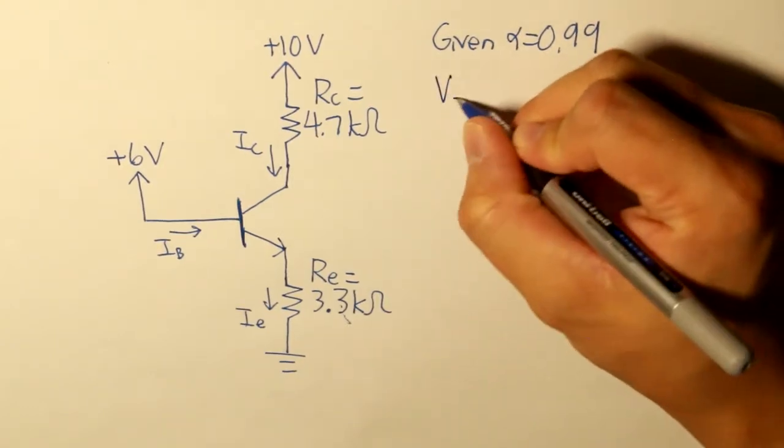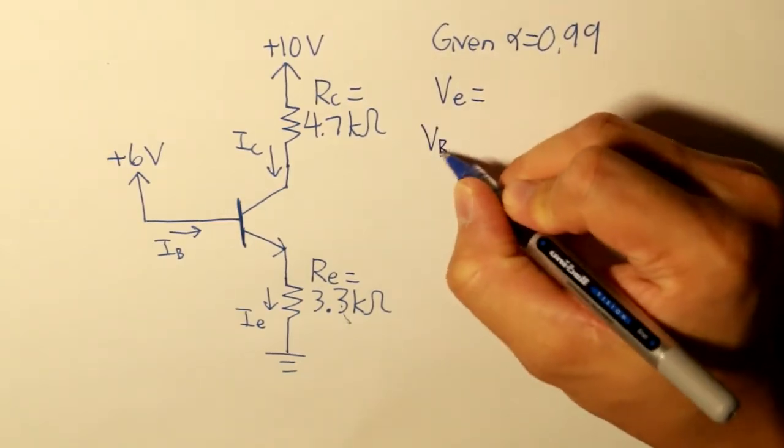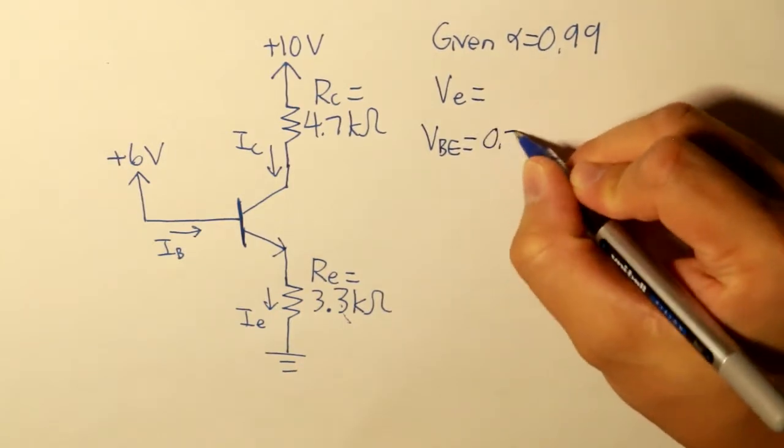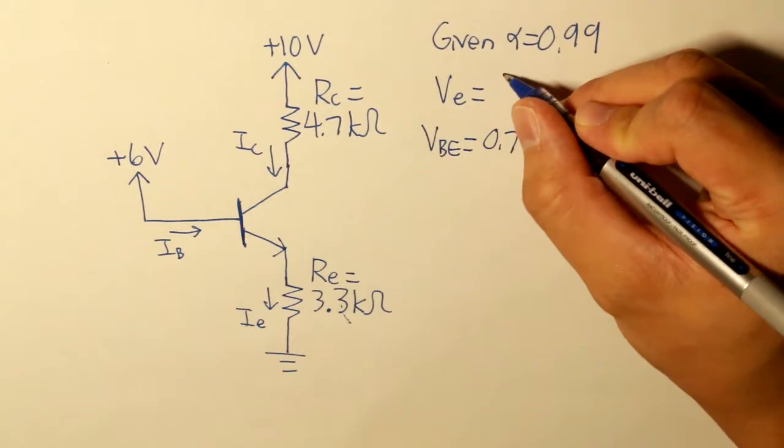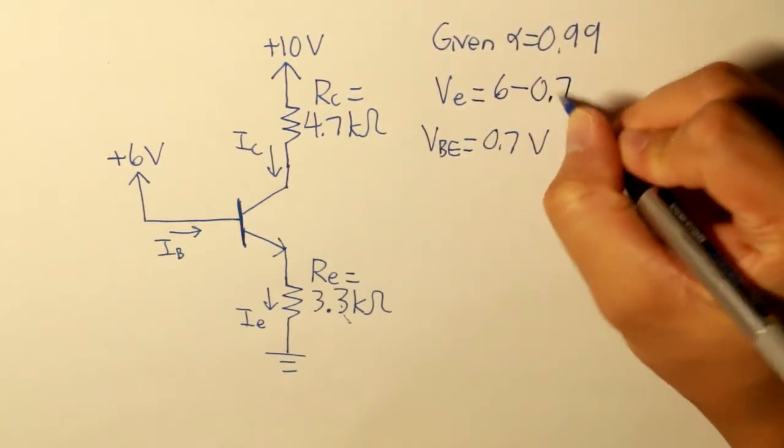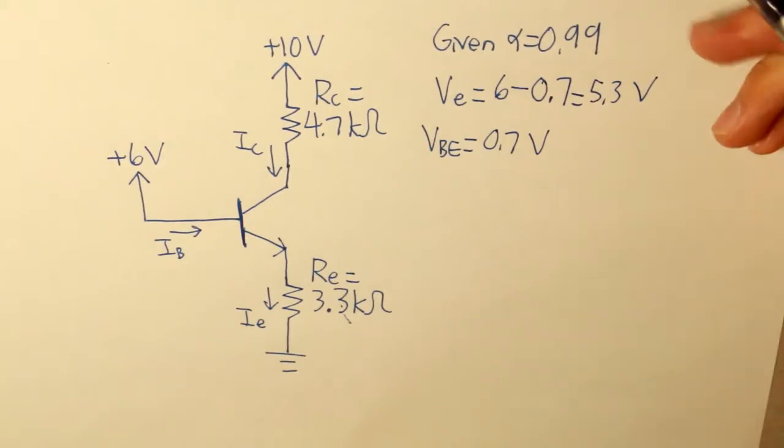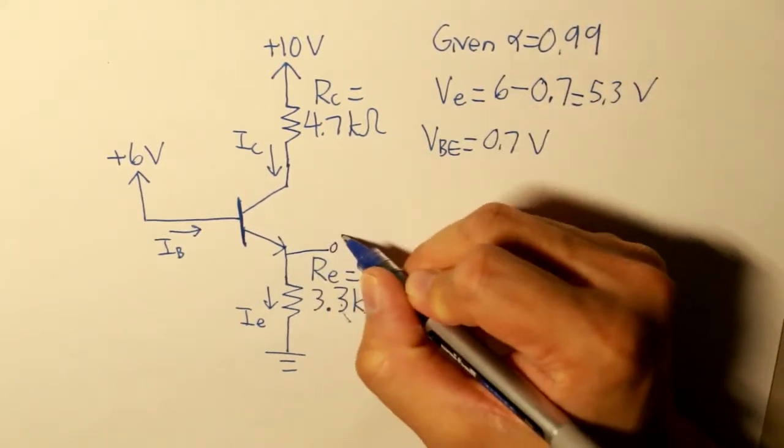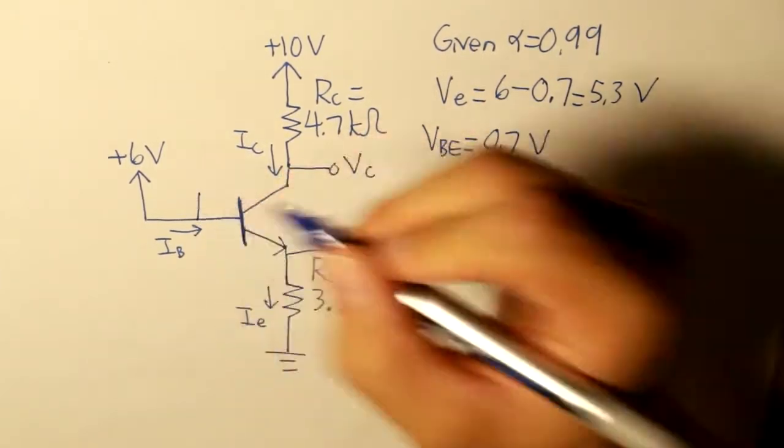So VE will be a little bit different as well. Consider this as the same assumption that VBE is equal to 0.7 volts. What is VE? Well that is equal to 6 subtracted by 0.7, and what we get is 5.3 volts. VE is 5.3, right here in this terminal. And let's write down all of our other two terminals.